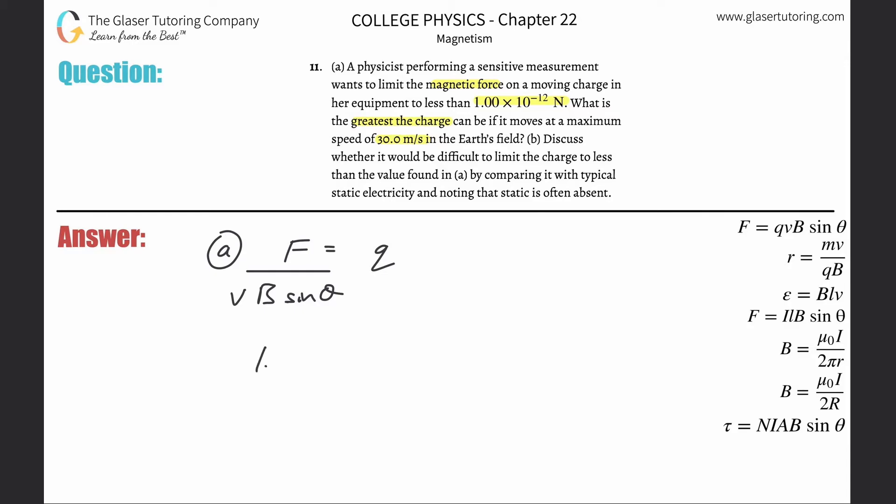So the force here, they told us is one times 10 to the minus 12 divided by the velocity, which is 30 meters per second. The strength of that magnetic field on earth is roughly around five times 10 to the minus fifth. And then we'll just say the sine of 90 degrees. It's going to equal Q. Let's plug it into the calculator. Let's see what we get. One times 10 to the minus 12 divided by parenthesis 30 times five times 10 to the minus fifth.